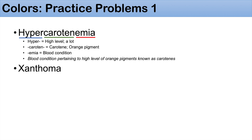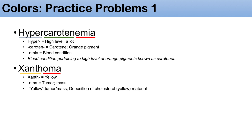The next practice problem is the word xanthoma. Xanth as a prefix means the color yellow, and oma stands for tumor or mass. So xanthoma means a yellow tumor or yellow mass. What xanthoma really refers to is a deposition of cholesterol material, and cholesterol is yellow — so it still very much aligns with its literal meaning of a yellow mass.